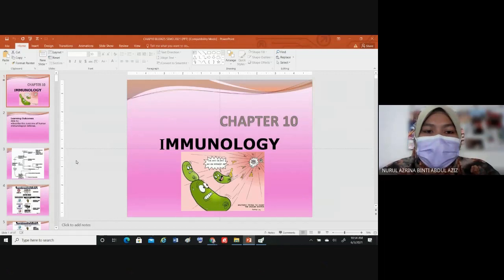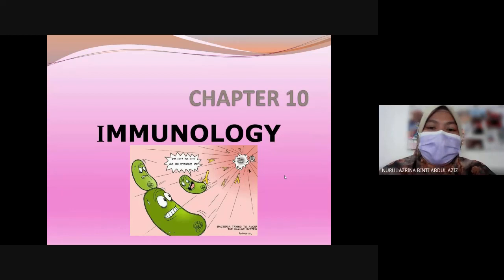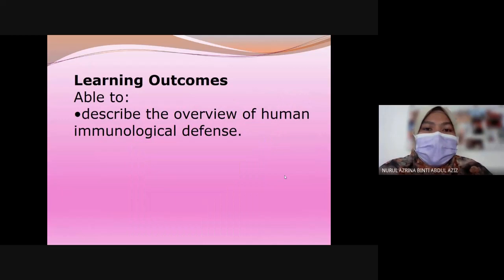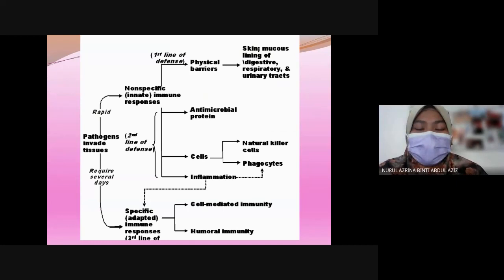Our new chapter is immunology. The basic of this chapter you may have studied in school — related to antibodies and important cells in the immune system. Our body has three lines of defense. The first is a rapid response and the second is a slightly delayed response. The rapid response is known as the non-specific or innate immune response, which acts as the frontline defense.